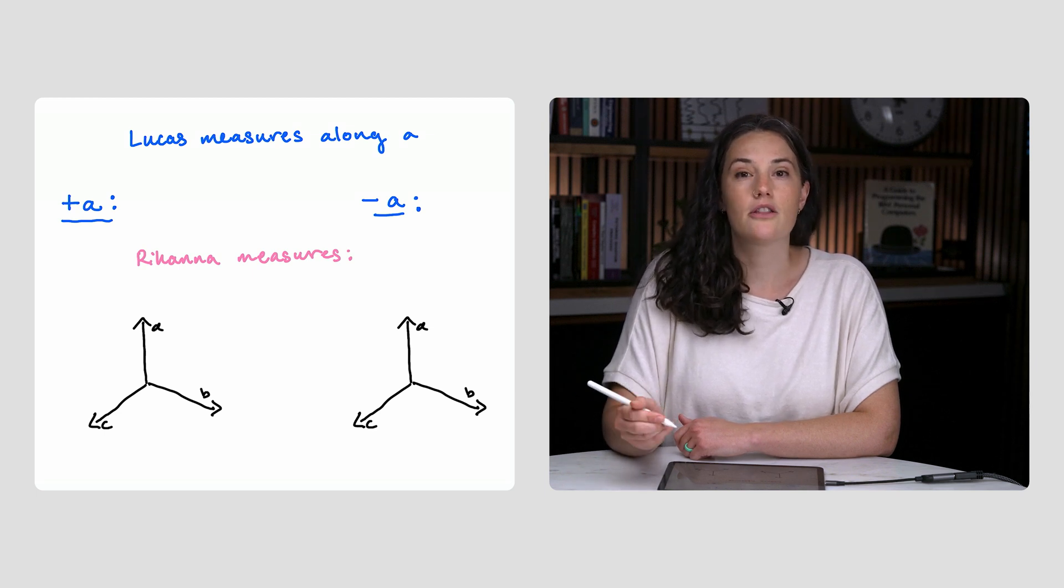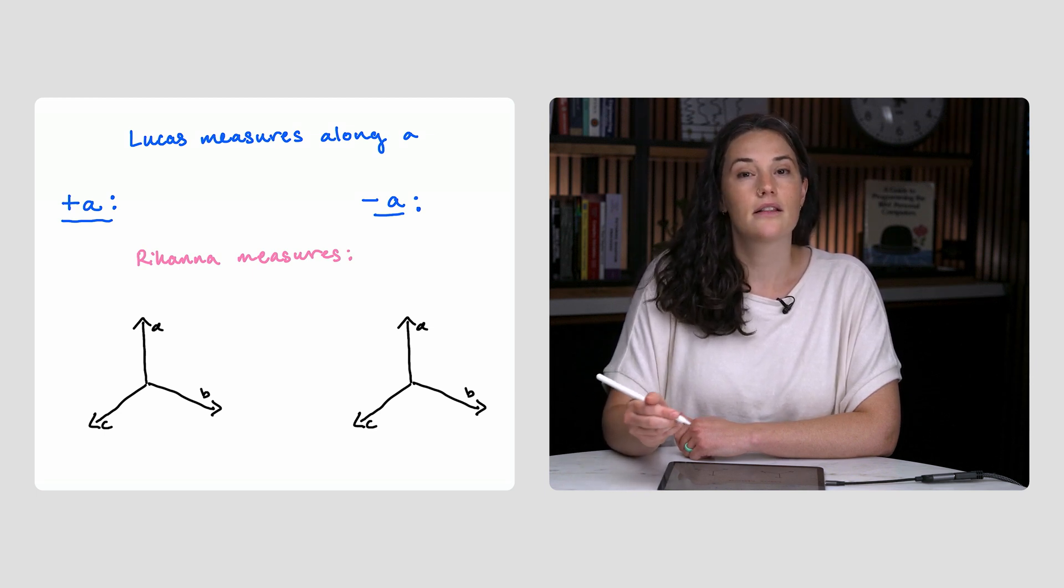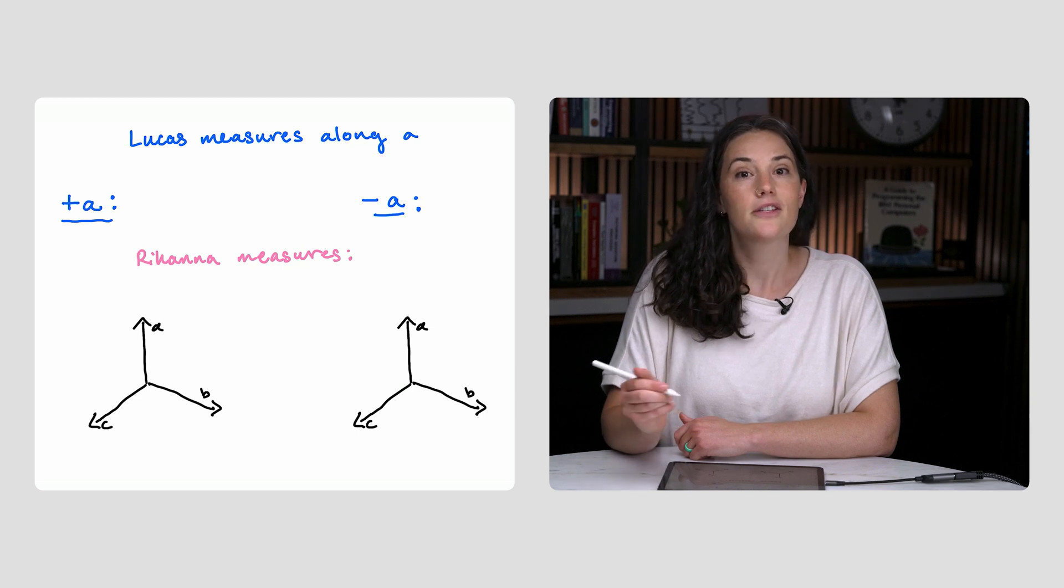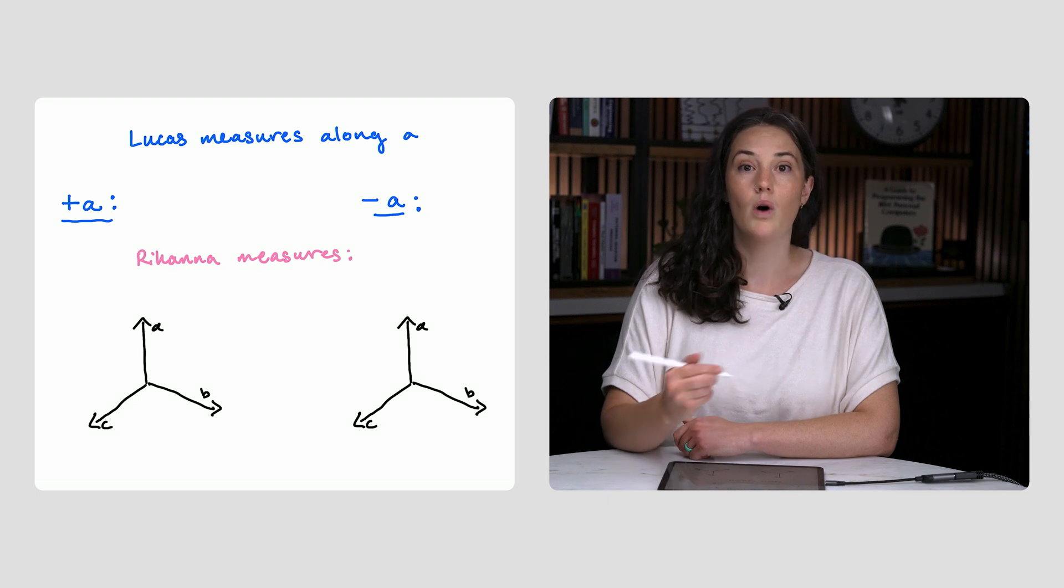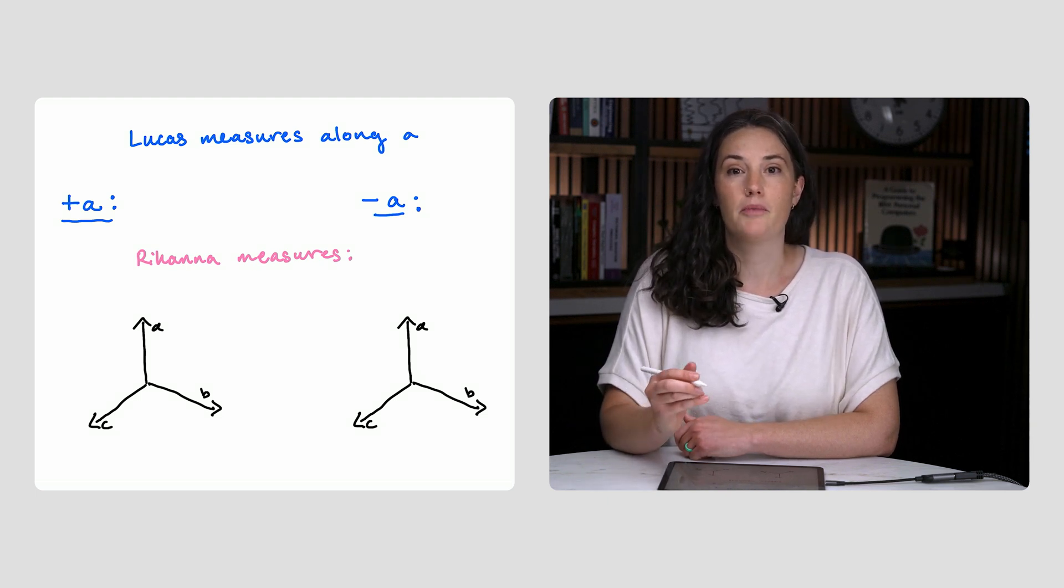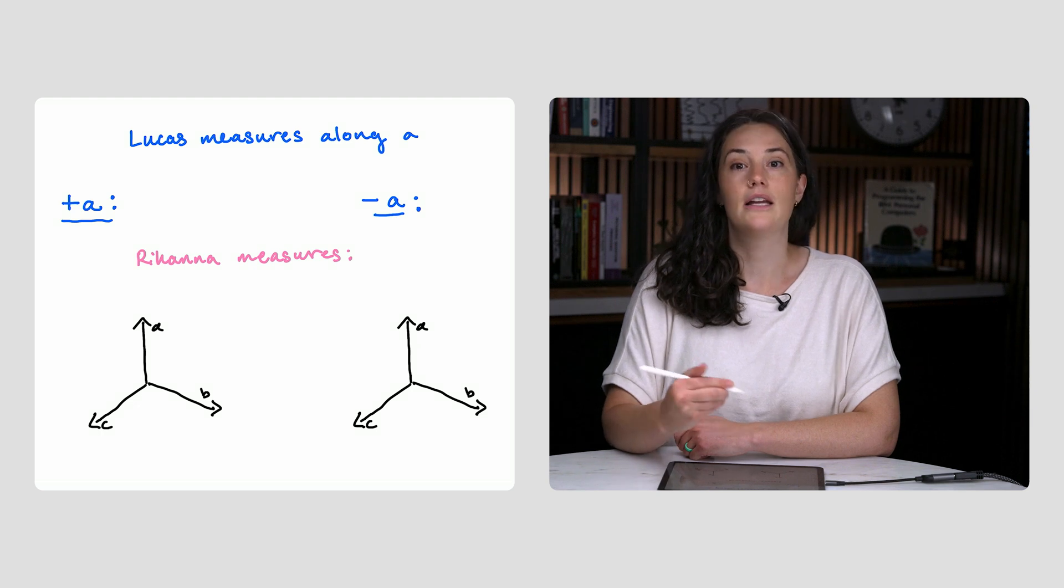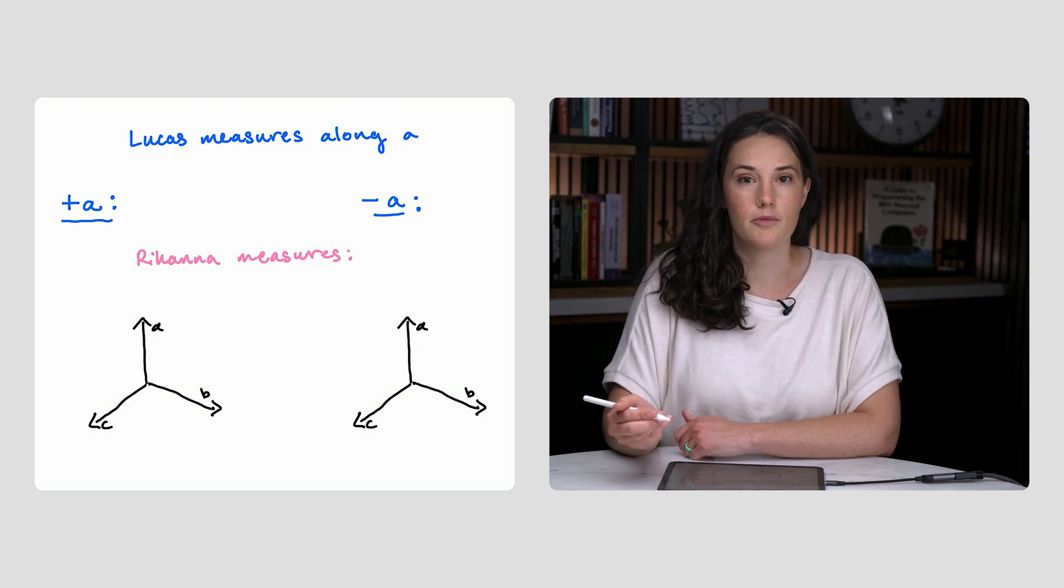If she measures along either B or C, it gets a little complicated. It turns out that, if you know what Rihanna will measure with 100% certainty along one direction, then you can calculate the probabilities that she will measure up or down along any other axis with a little geometry.